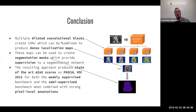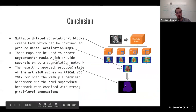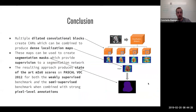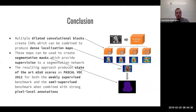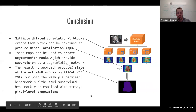In conclusion, the paper proposes using multiple dilated convolutional blocks to create class activation maps, which are combined to produce dense localization maps. These dense localization maps can be used to create segmentation maps that provide supervision for a segmentation network without needing expensive pixel-level annotations. The resulting approach produces state-of-the-art mean IoU scores on Pascal VOC 2012 for both weakly supervised and semi-supervised results when combined with strong pixel-level annotations. Does anybody have any questions?